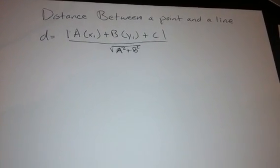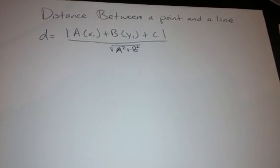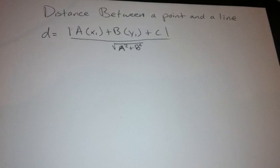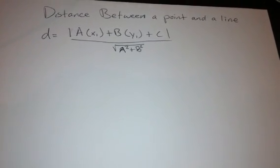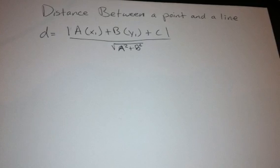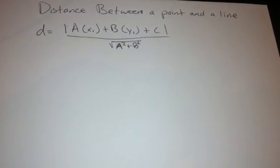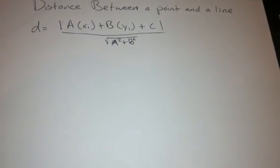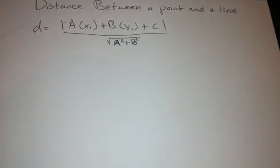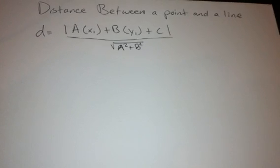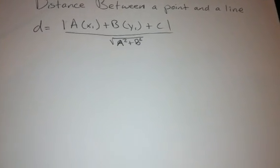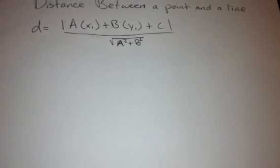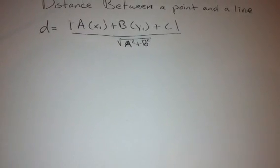Now we're working with the distance between a point and a line. It's given by the equation: distance equals the absolute value of a times x₁ plus b times y₁ plus c, all over the square root of a squared plus b squared, where a is the leading coefficient of x, b is the leading coefficient of y, and c is the constant.